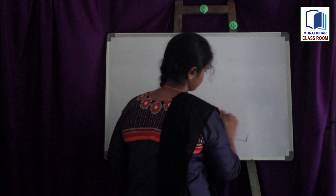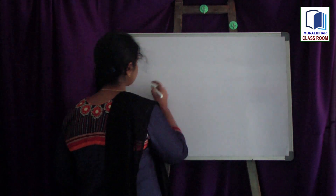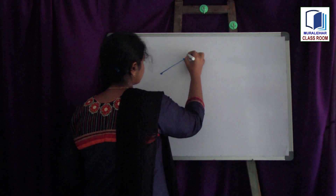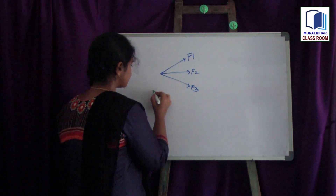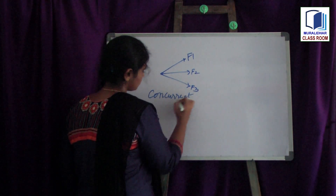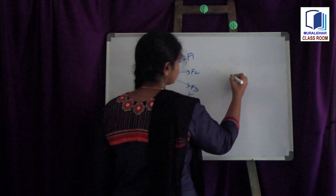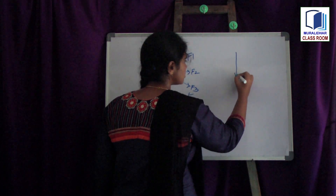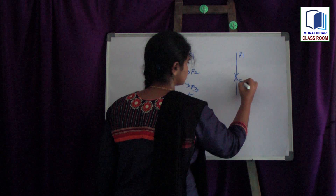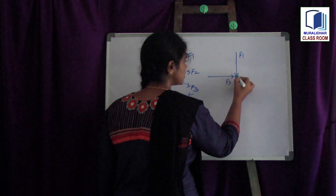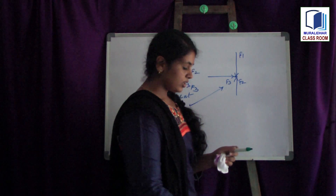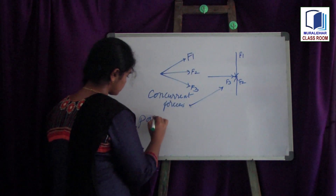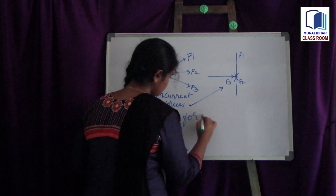The second classification is concurrent forces. Concurrent forces means the forces which will meet at a point. For example, this is a point, and there are forces F1, F2, and F3 coming from the point — these forces meet at a point and go away from it, so this can be said as concurrent forces. Also, forces coming towards a point are also concurrent forces, because they are going to meet at a point finally.